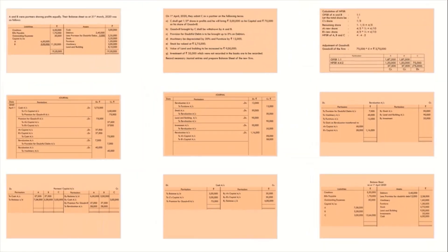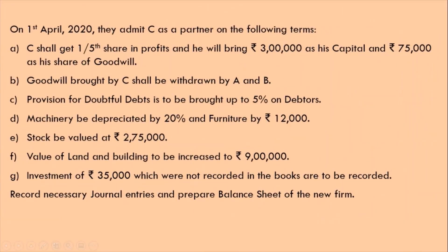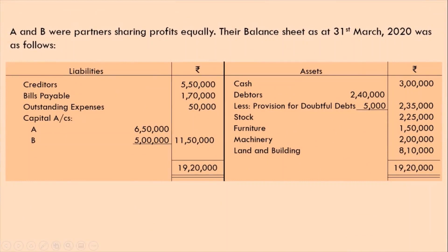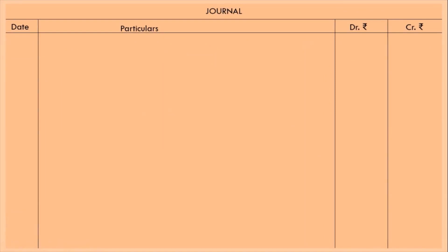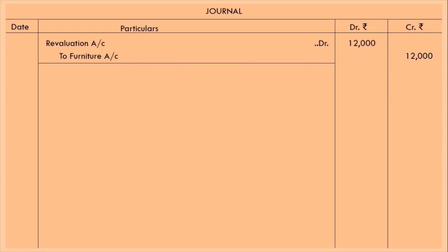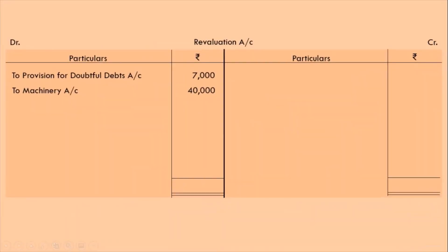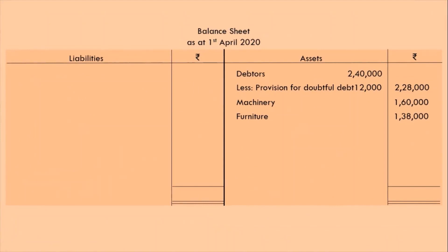Another part of this adjustment: depreciate furniture by Rs 12,000. Value of furniture is Rs 1,50,000. We will decrease it by Rs 12,000, so we will credit it — and again as this is a loss, we will debit the revaluation account. All expenses and losses are debited. In revaluation account, as furniture also gives us a loss, record on debit side: to furniture Rs 12,000. Then in the balance sheet, furniture Rs 1,38,000.